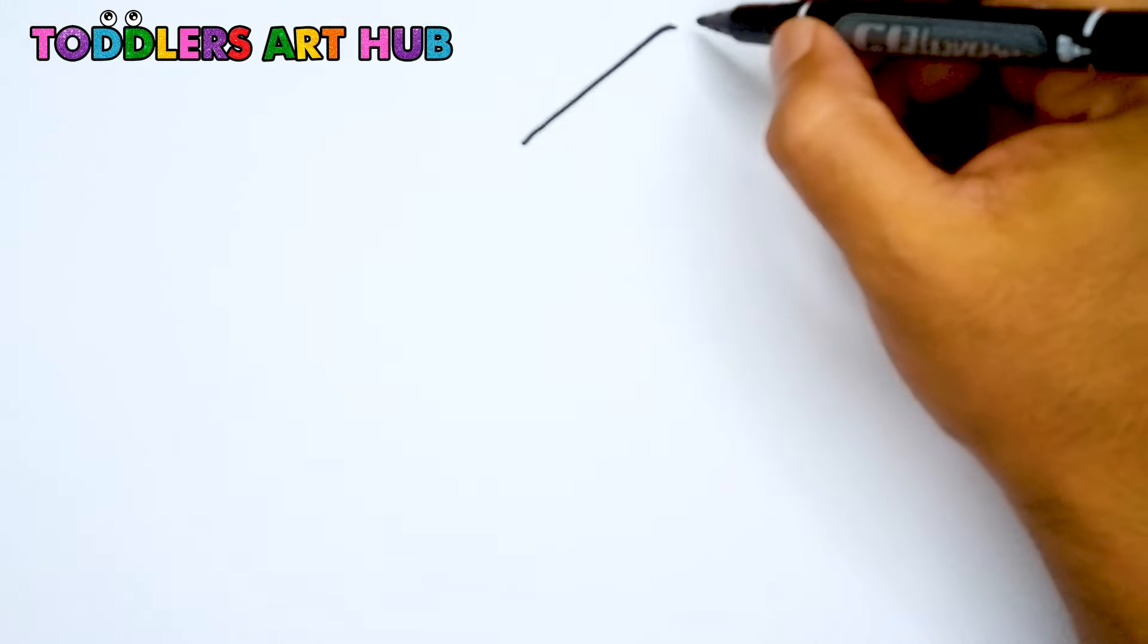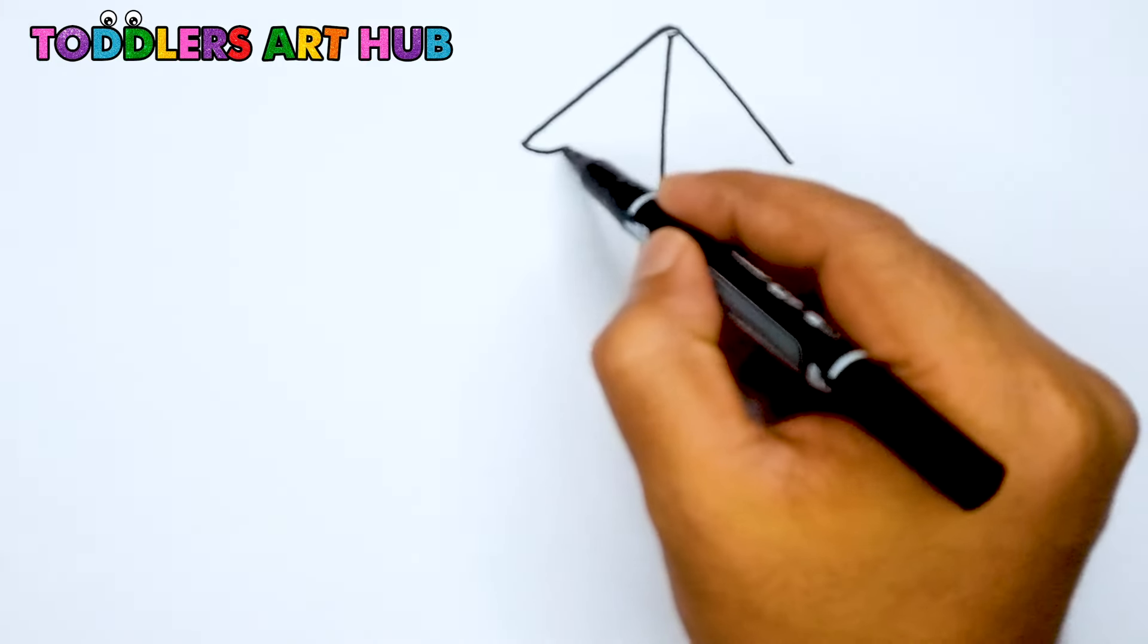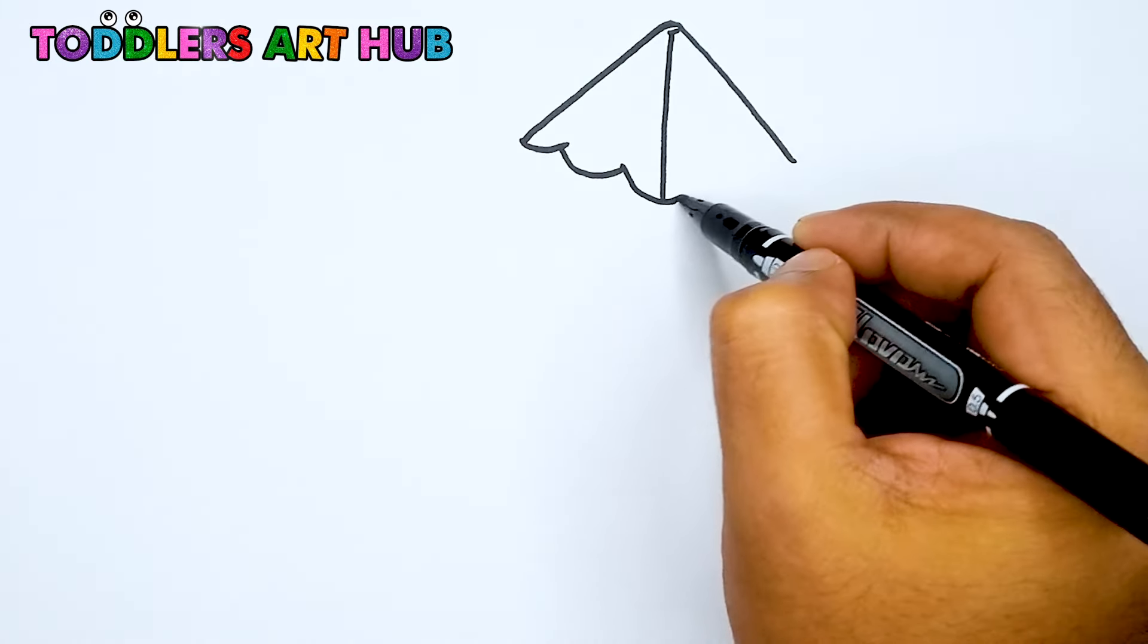First, let's start by drawing the roof of our playground slider. At the top of your paper, draw a small triangle. This will be the roof of our slider.